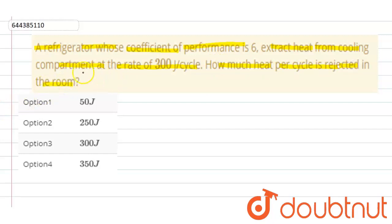So this cooling compartment means it is the sink and the heat extracted from the sink is represented by Q2, that is 300 joule, and we have to find how much heat per cycle is rejected. That means we have to find Q1 and beta is given here, that is coefficient of performance 6.